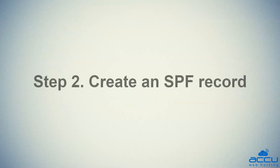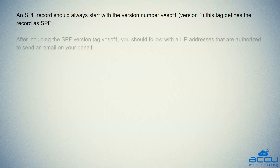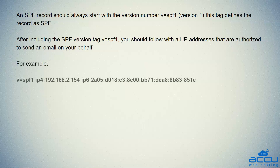Step 2: Create an SPF record. An SPF record should always start with the version number v=spf1 (version 1). This tag defines the record as SPF. After including the SPF version tag v=spf1, you should follow with all IP addresses that are authorized to send an email on your behalf. Below is an example for it.